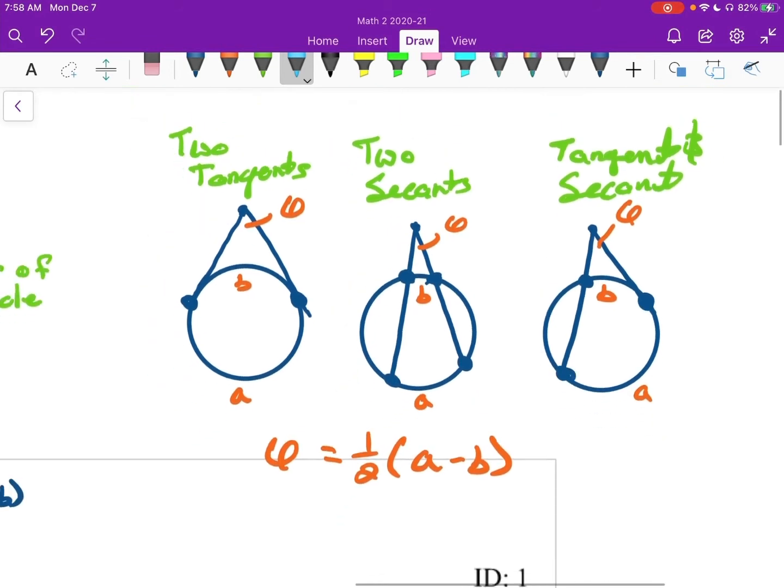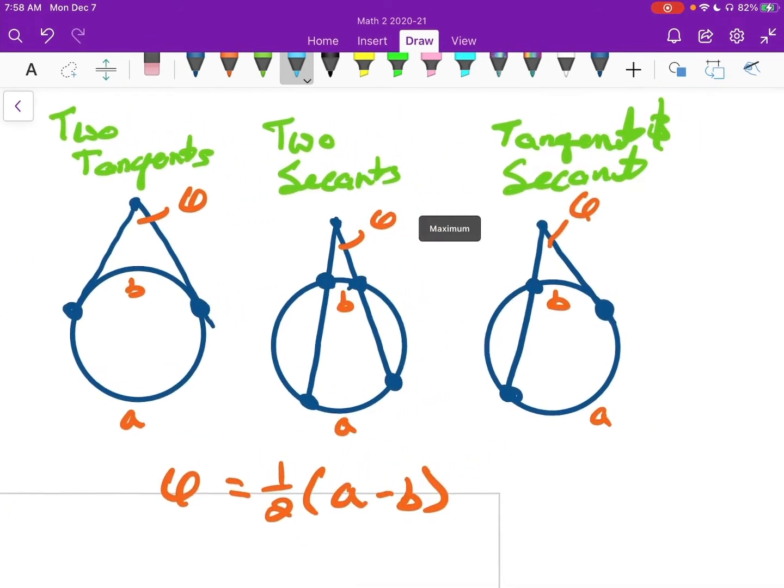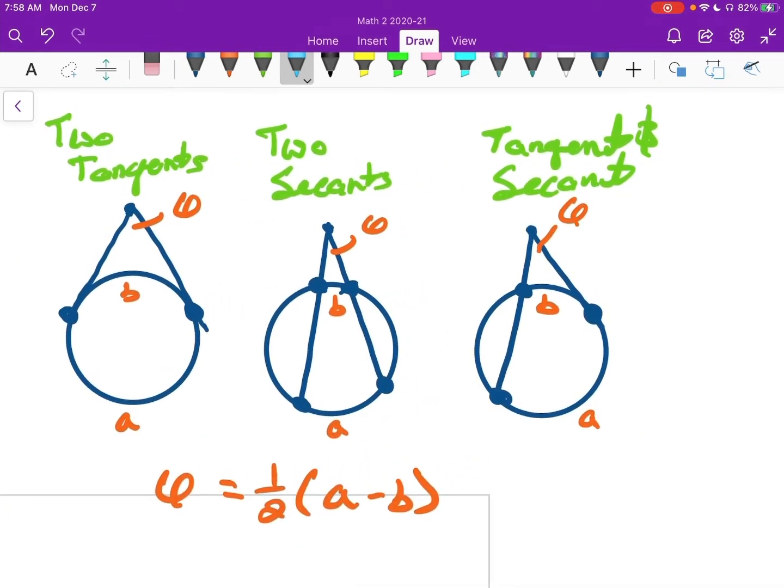And then lastly, we have three different scenarios that all follow the same formula. So you have two tangents. Sorry, on the left. Two tangents. So I've got this is a tangent. And this is a tangent. And then we're looking at the angle that they form. Well, the angle that they form is one half the big arc minus the small arc. So you always think the big arc is the one farther away. Big minus small.